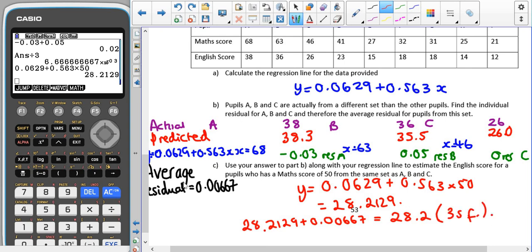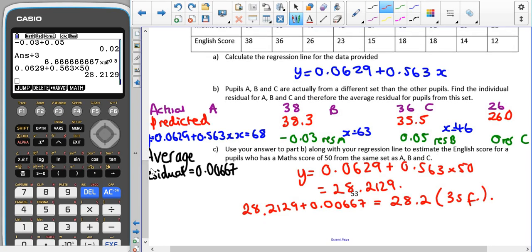Sometimes they might ask was it worth calculating the residual in this case, and the answer would probably be no because overall it doesn't change the outcome. Those three pupils are still quite close to the regression line. That's it for regression and correlation. It's very important to remember we are wanting things to be linear. You shouldn't really be using regression lines to estimate values outside the range of data given. However, we can use residuals to help us find better estimates. Thank you very much for listening.